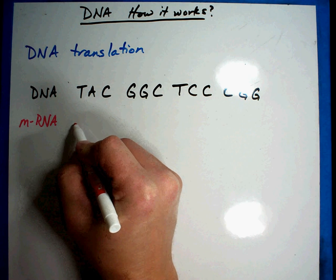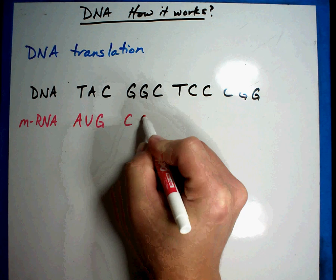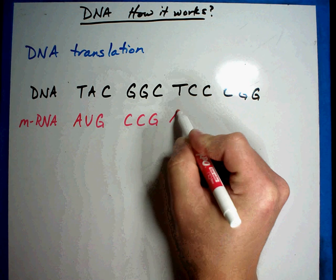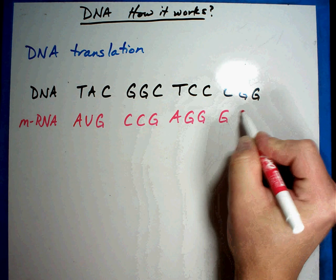So let's see what we get here. We get A, U, G, C, C, G, A, G, G, G, C, C.